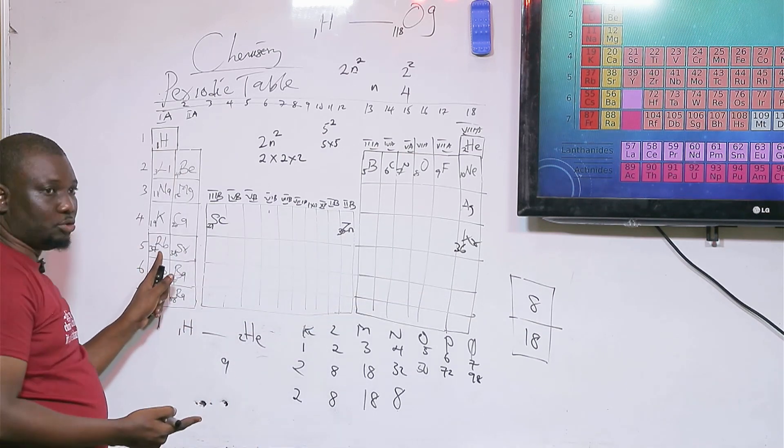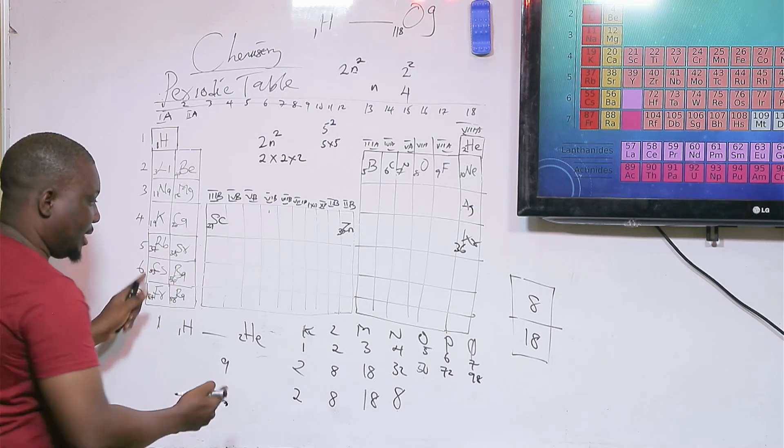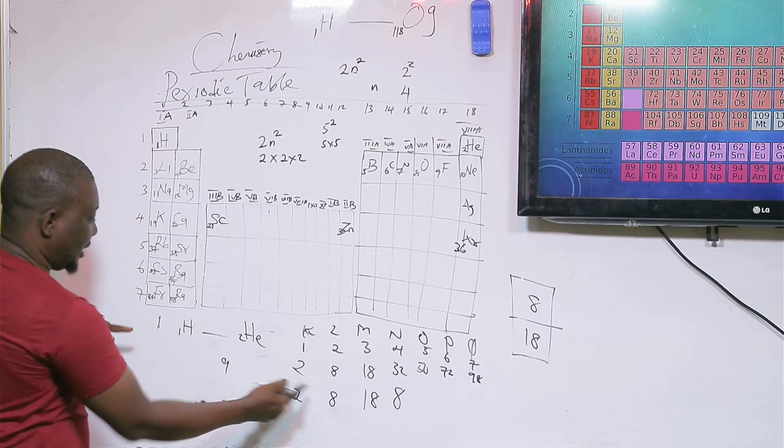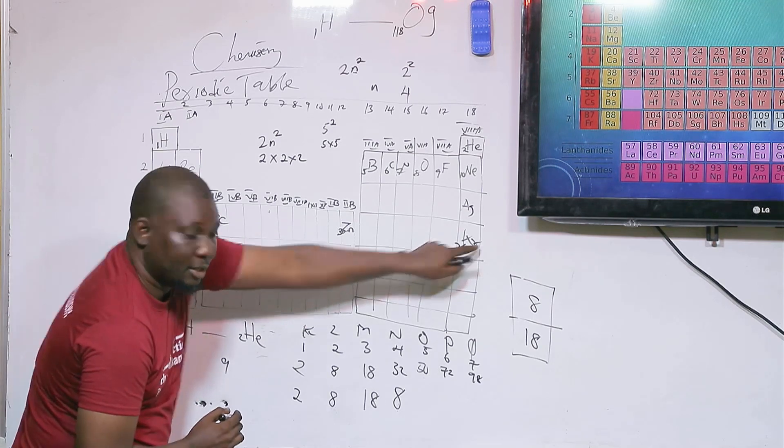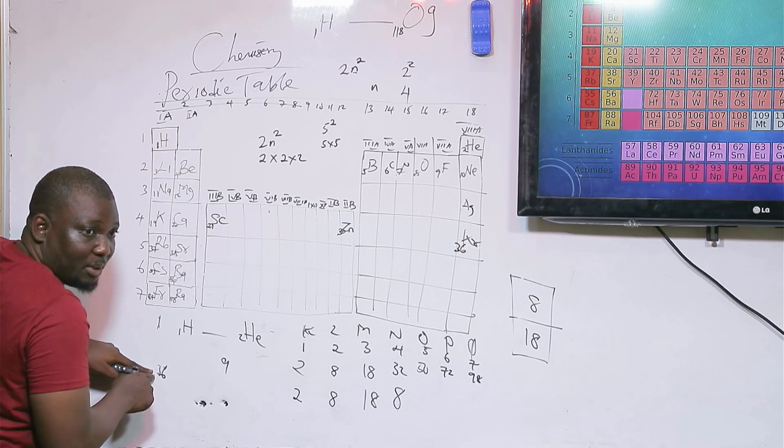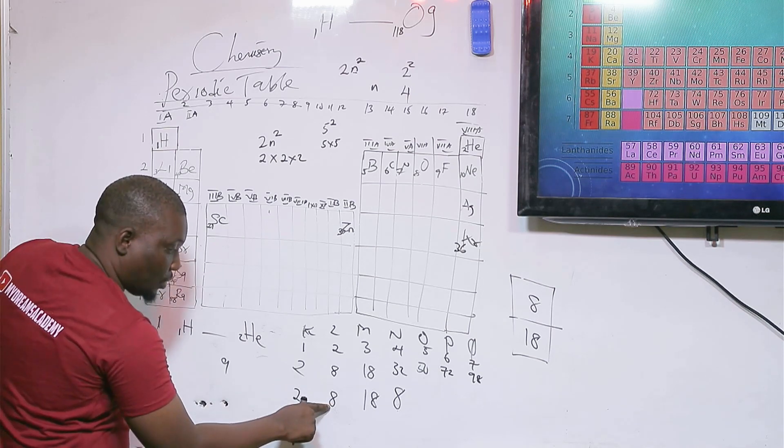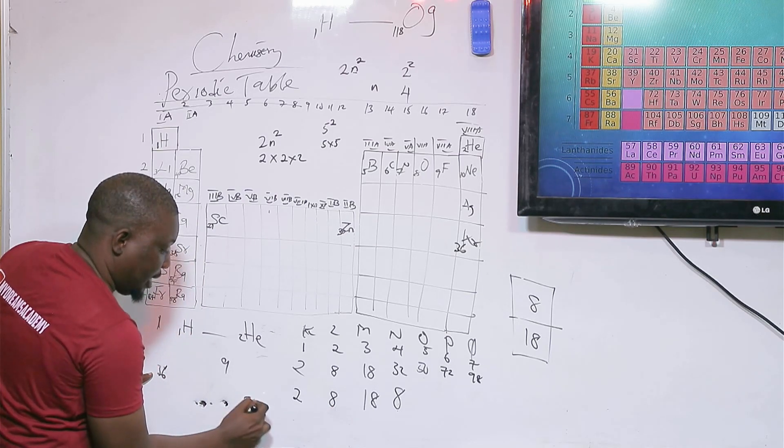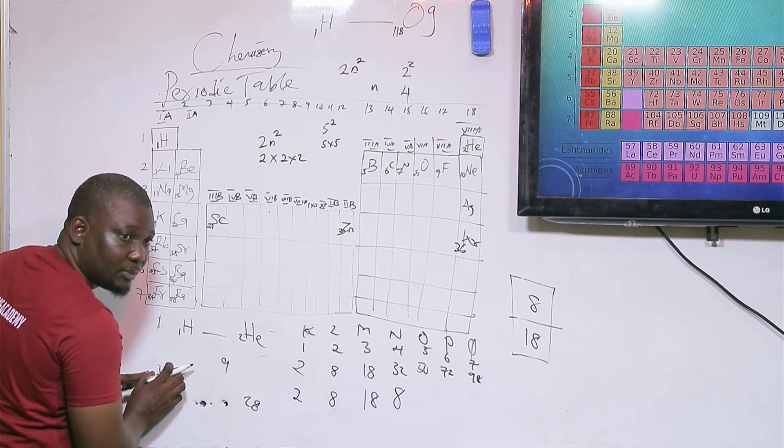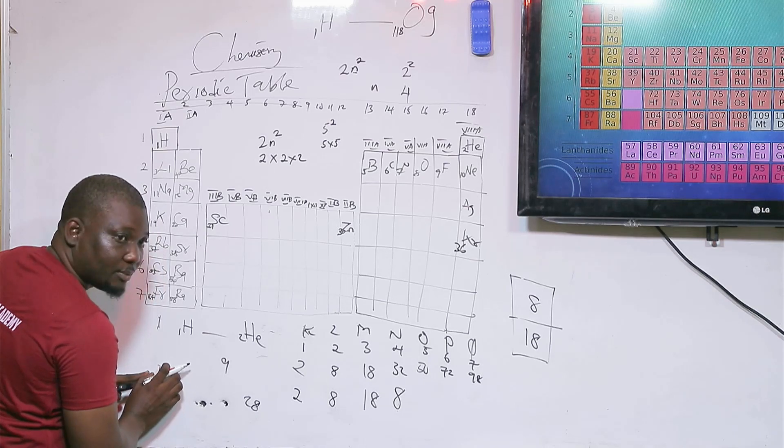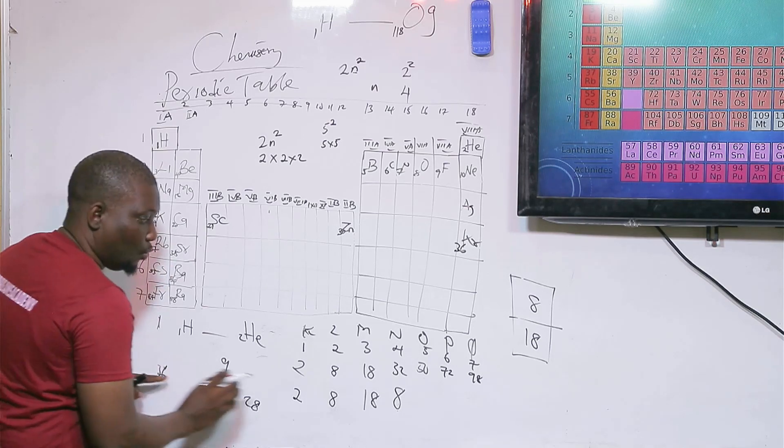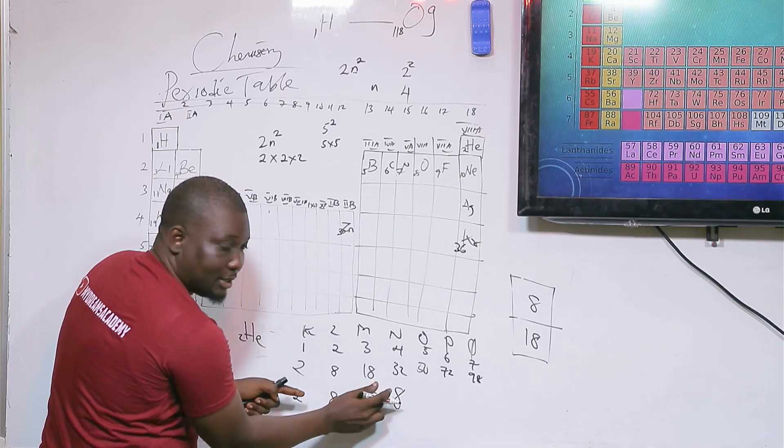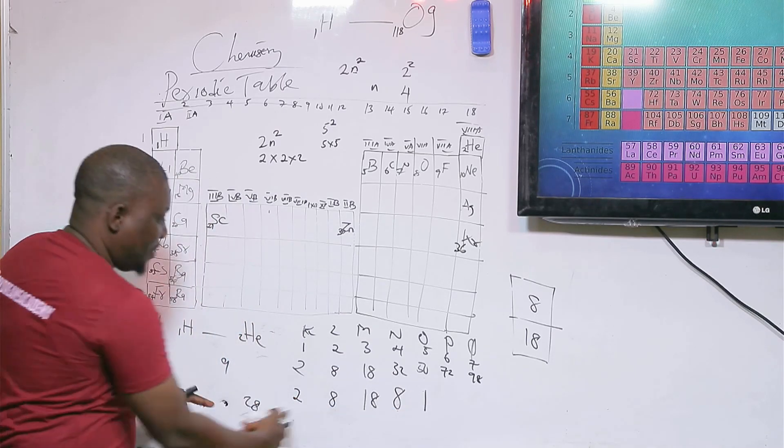Now rubidium is 37. This is 36, right? We have 2, 8, 18. When I add these up, we have 28. Minus 28 from 36 gives you 8. If you minus 28 from 37, you have 9. Will you put 9 here? No. Check which octet level 9 is closer to: 8 or 18? What goes here is 8, then 1 will go in the next shell.